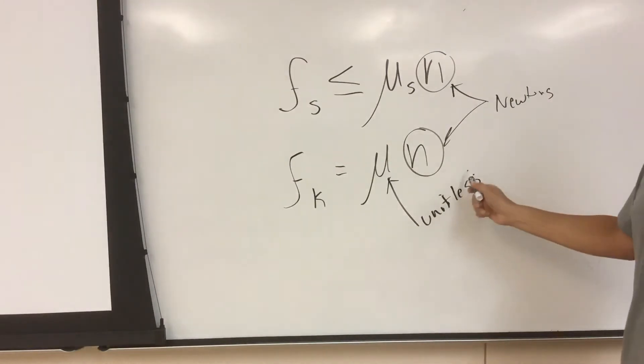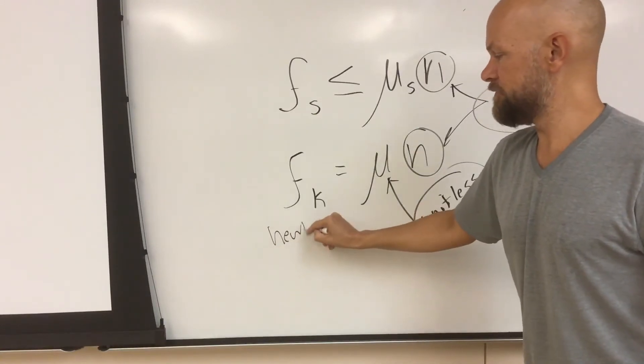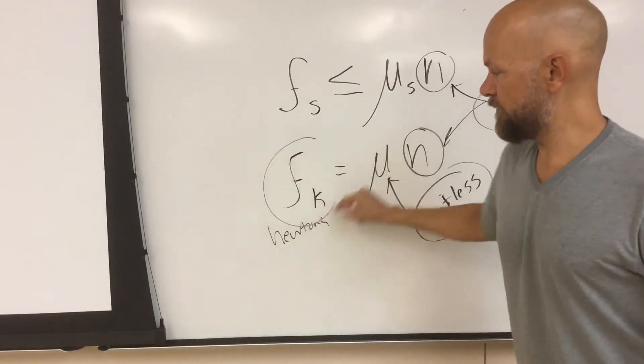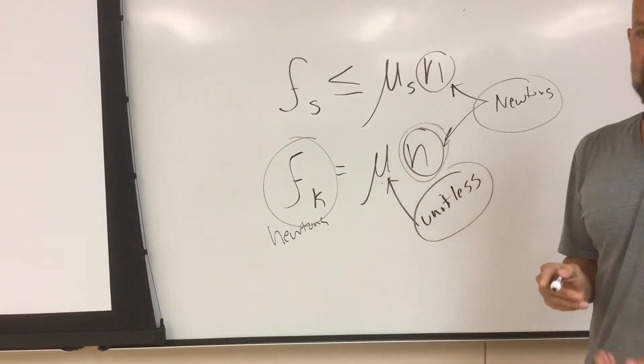So when we multiply a dimensionless quantity times some number of newtons, we get some number of newtons. So friction force is a force, normal force is a force, and the coefficient is just a pure number.